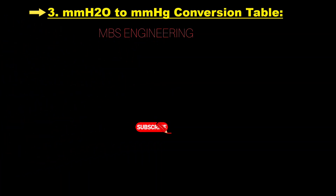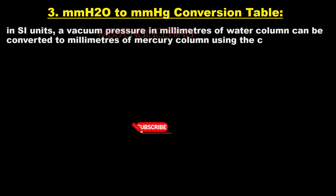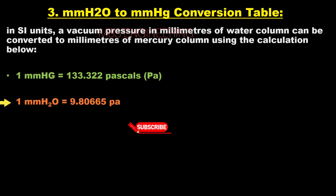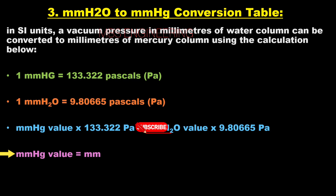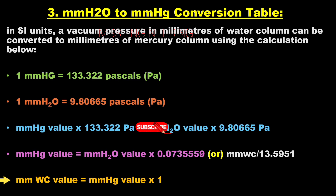We will learn and understand the pressure conversion table. In SI units, a vacuum pressure in mm of water column can be converted to mm of mercury using the following: 1 mm of mercury equals 133.322 pascals, and 1 mm of water column equals 9.80665 pascals. Therefore, 1 mm of water column equals 0.0735559 mm of mercury, or mm of water column divided by 13.5951. Conversely, mm of water column equals mm of mercury multiplied by 13.5951.